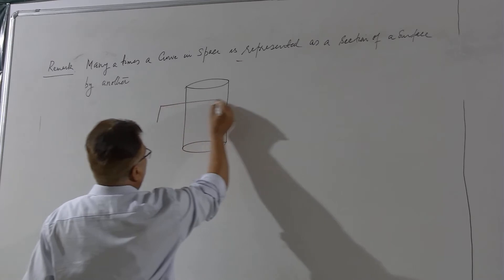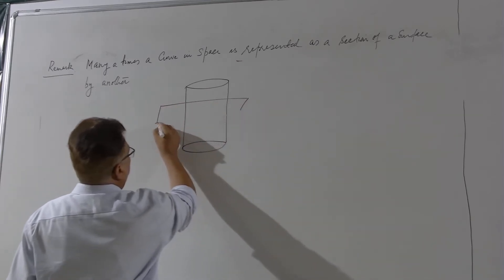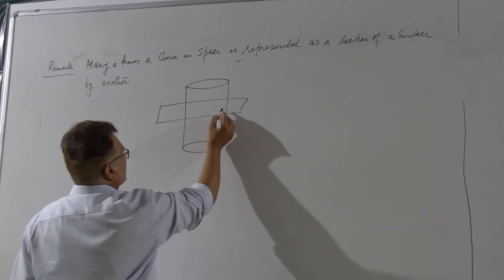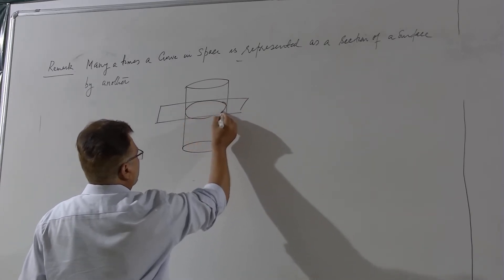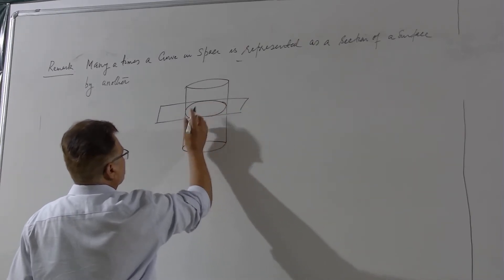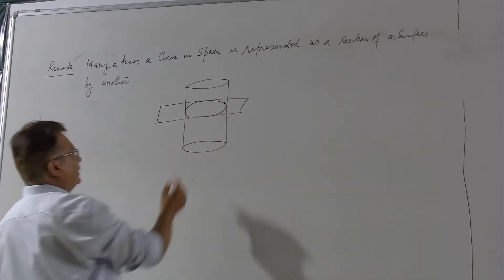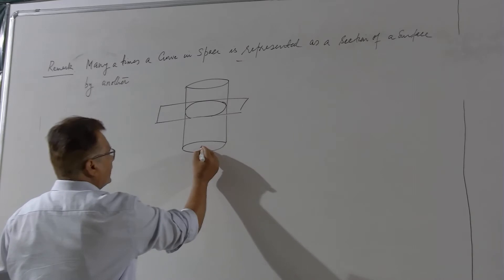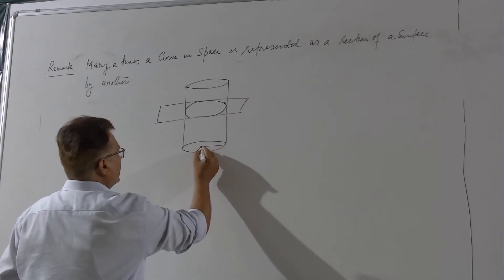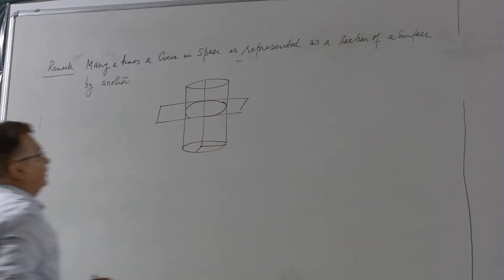And then you cut it by a plane. Now the intersection of the two will be a circle like this. Now this circle is not lying in the xy plane, it is above the xy plane.